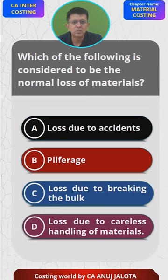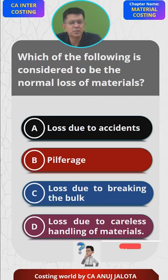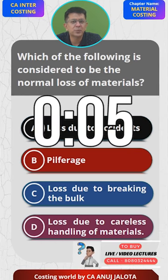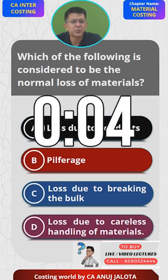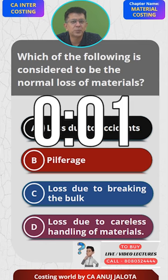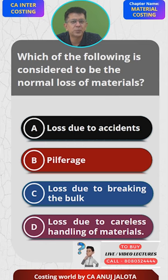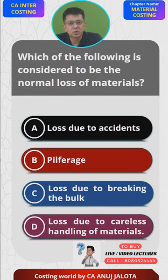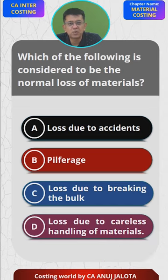Think and comment below. Okay, so I think out of the four, the answer should be C — loss due to breaking the bulk. Let me explain why.